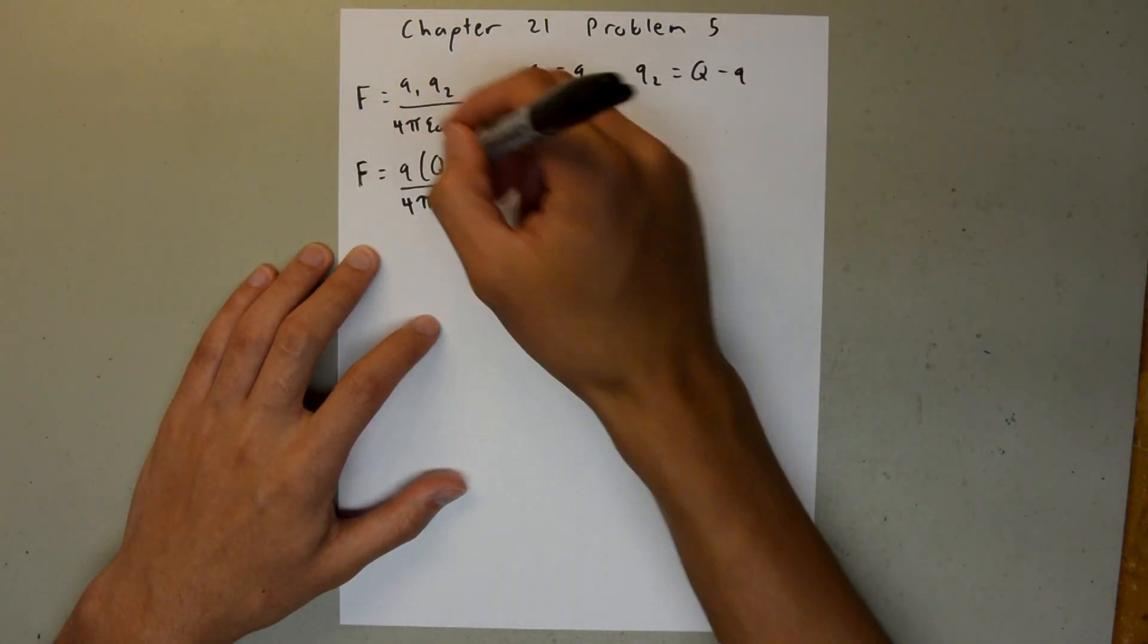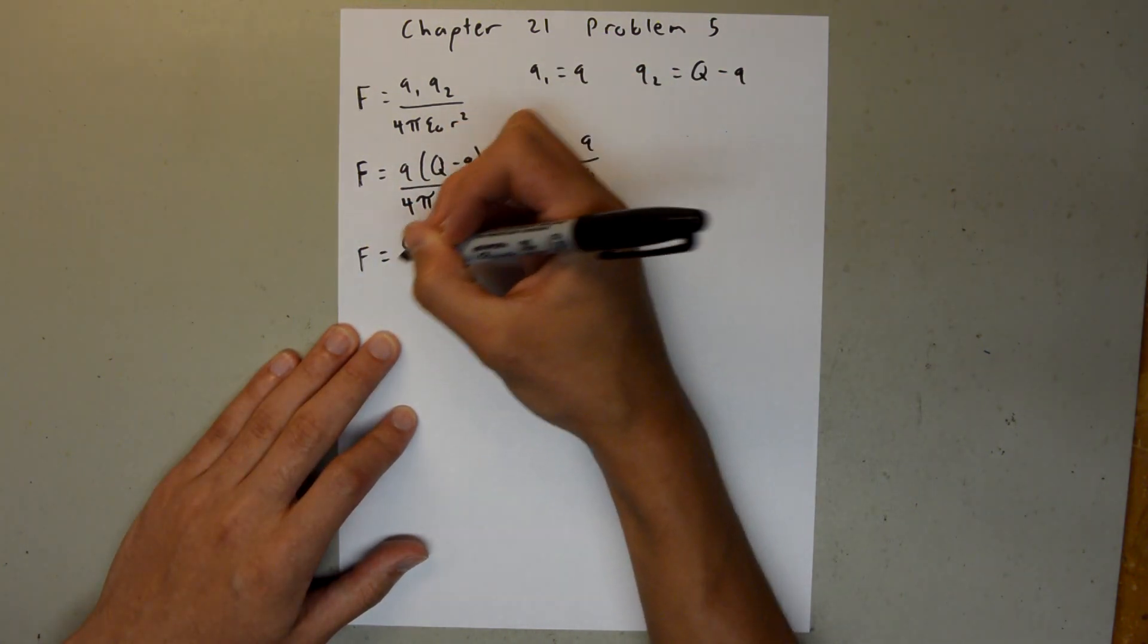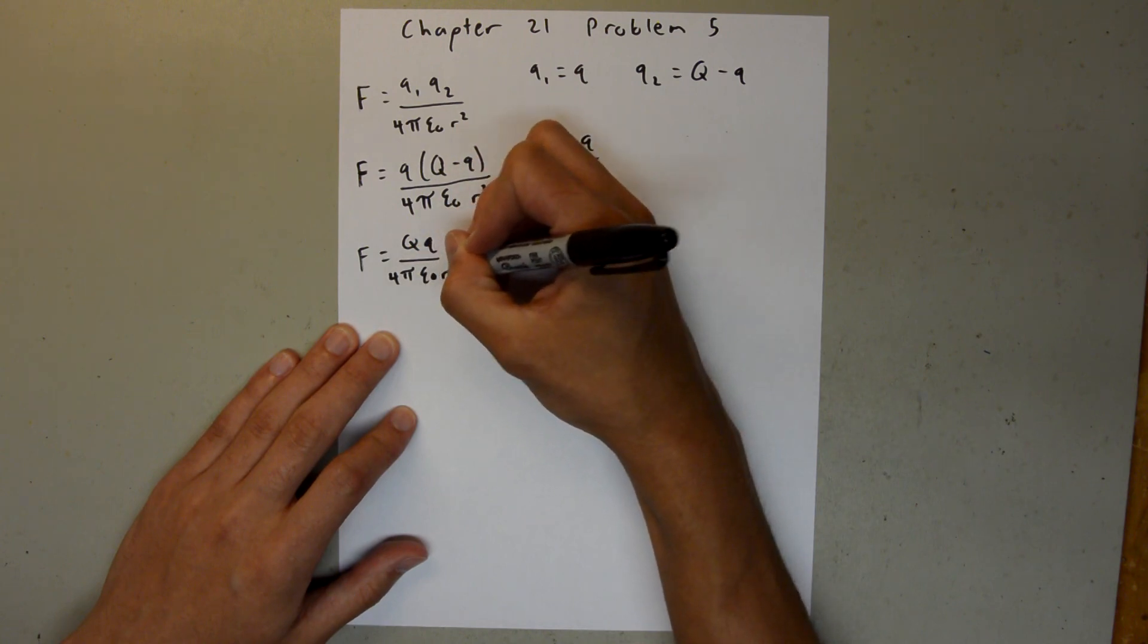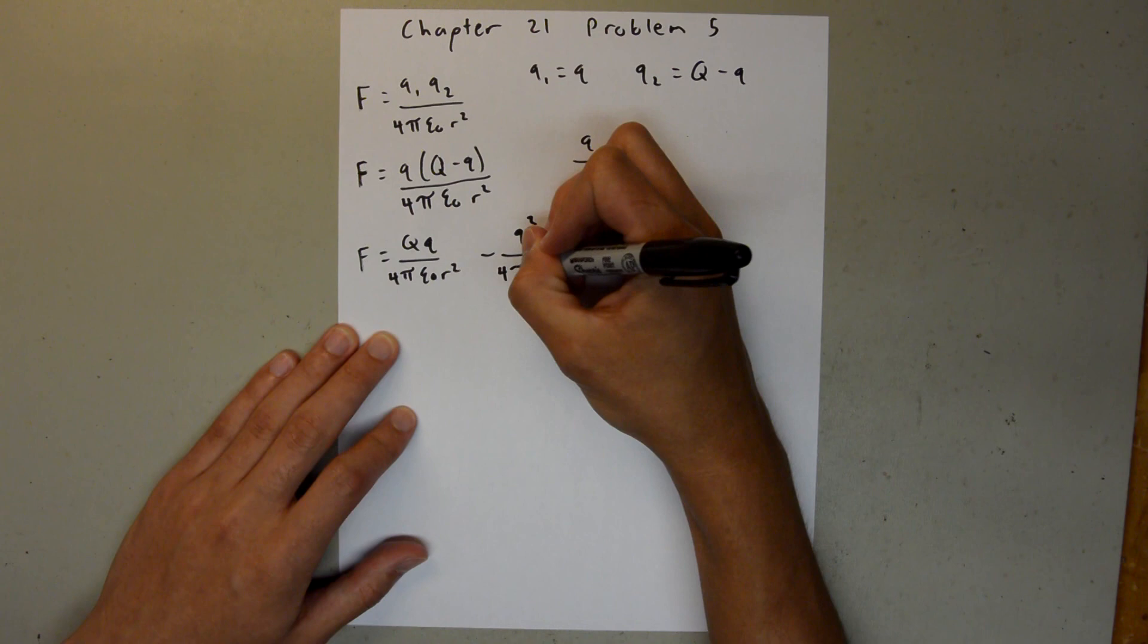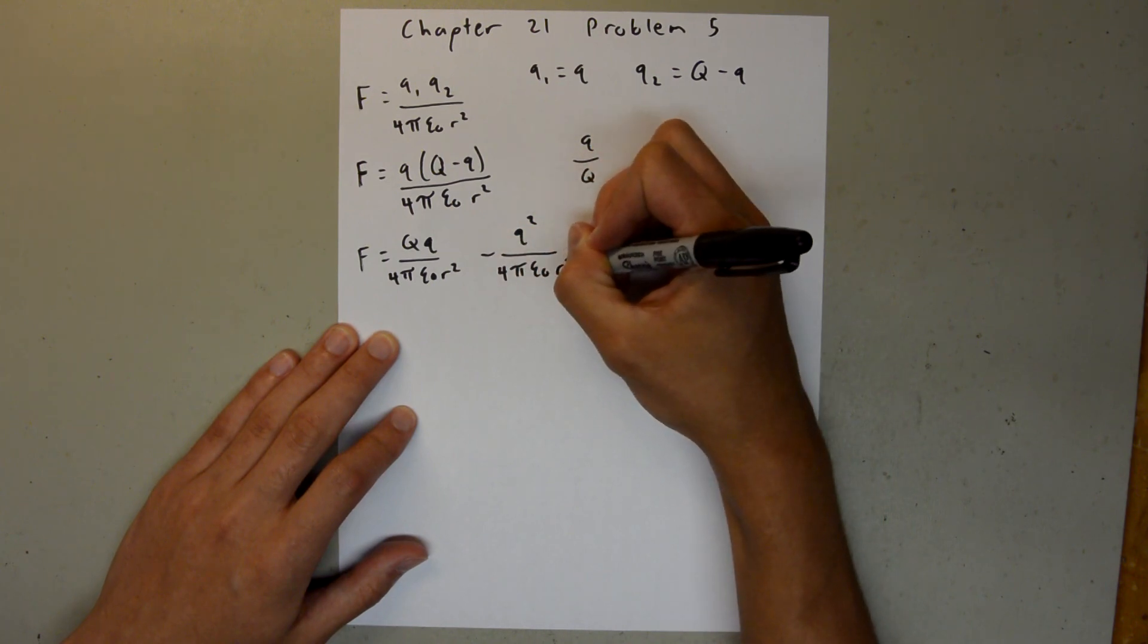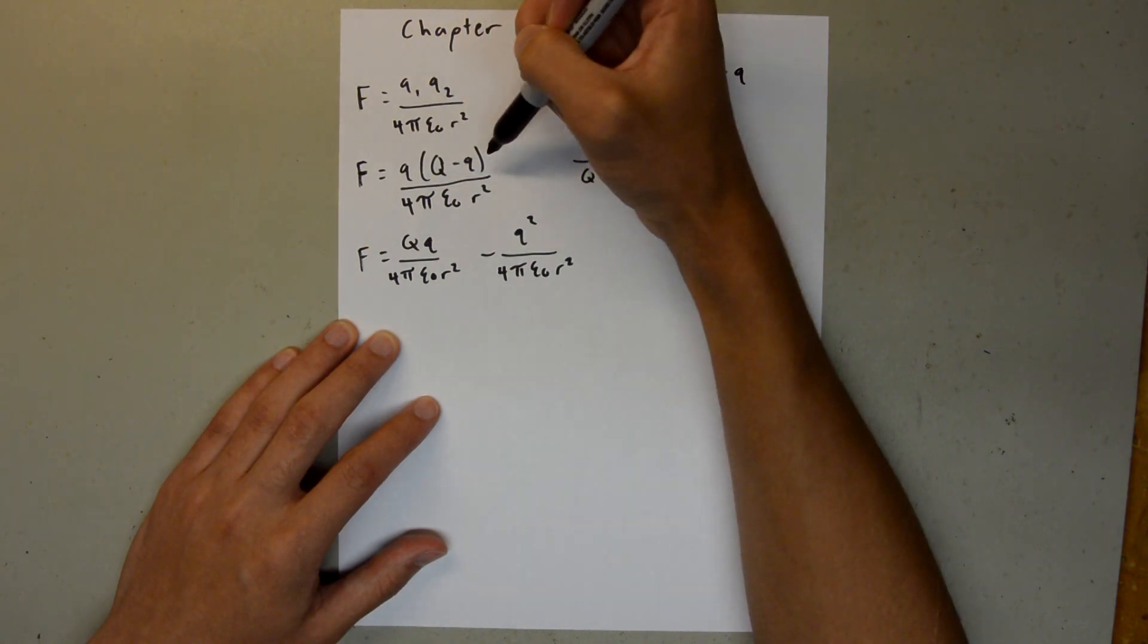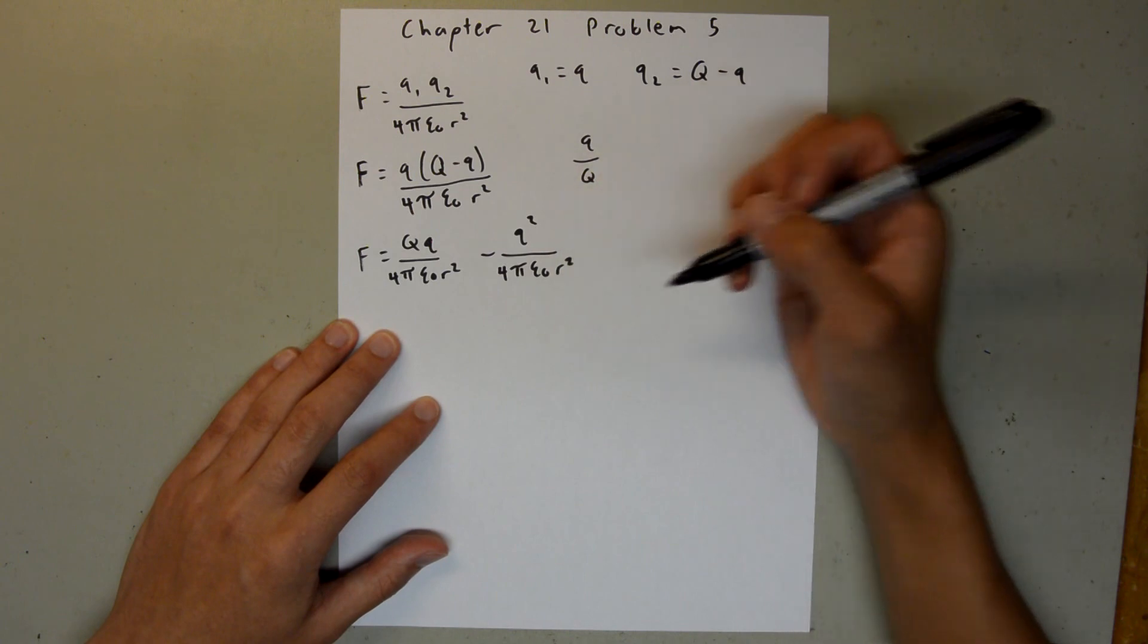So, we can expand this out and say, F is equal to big Q little q over 4 pi epsilon sub 0 r squared, minus q squared over 4 pi epsilon sub 0 r squared. I just multiplied this q out, and then I divided each term by this denominator, which gives us this.